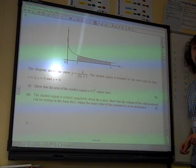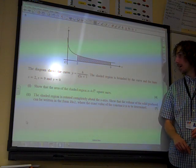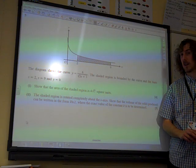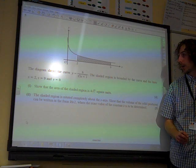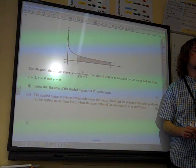The diagram shows the curve y equals 6 over the square root of 3x plus 1. The shaded region is bounded by the curve and the line x into 2x, which is now y equals 0.